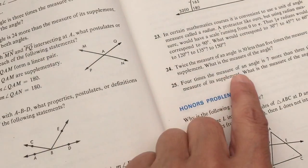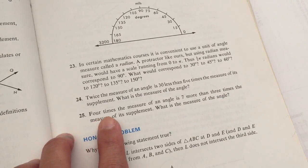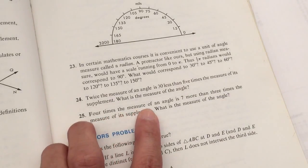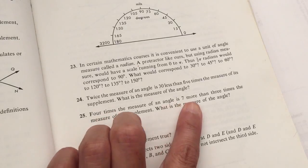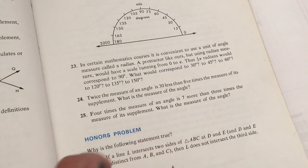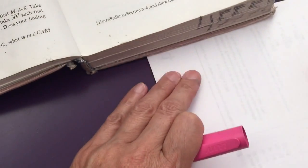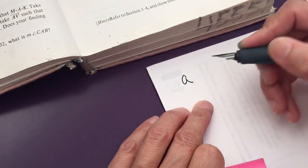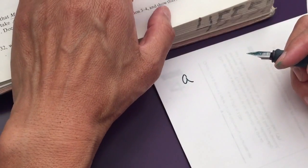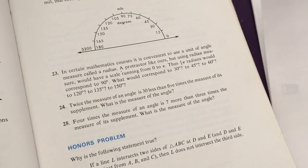Four times the measure of an angle. Okay, hello dear friends. Now we come to a new problem. Four times the measure of an angle is seven more than three times the measure of its supplement. What is the measure of the angle?